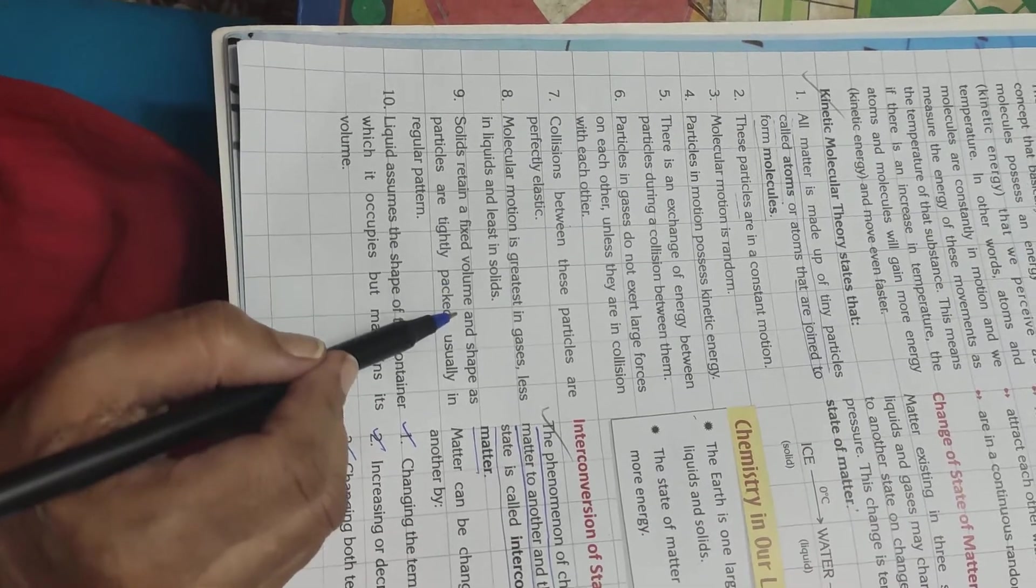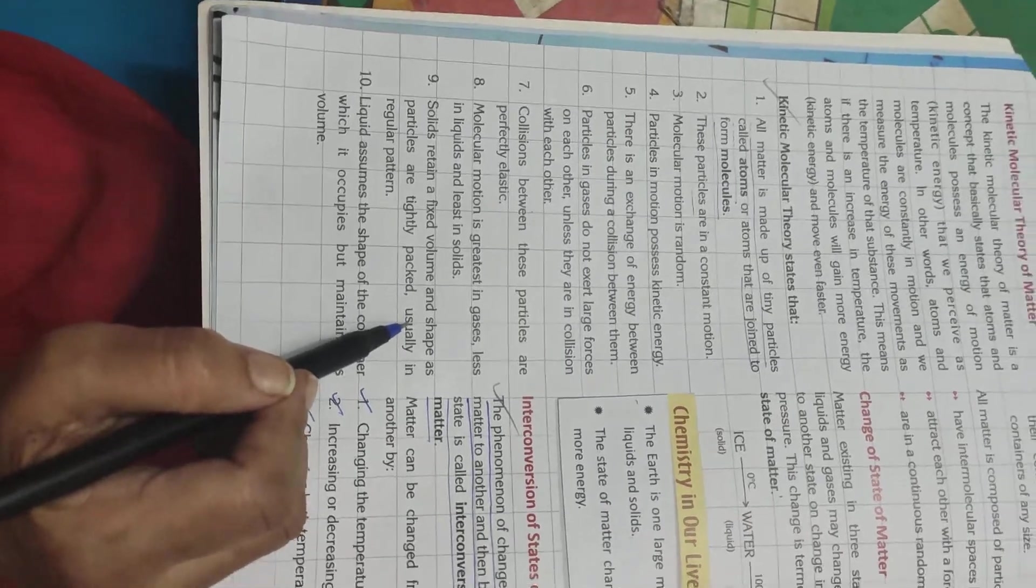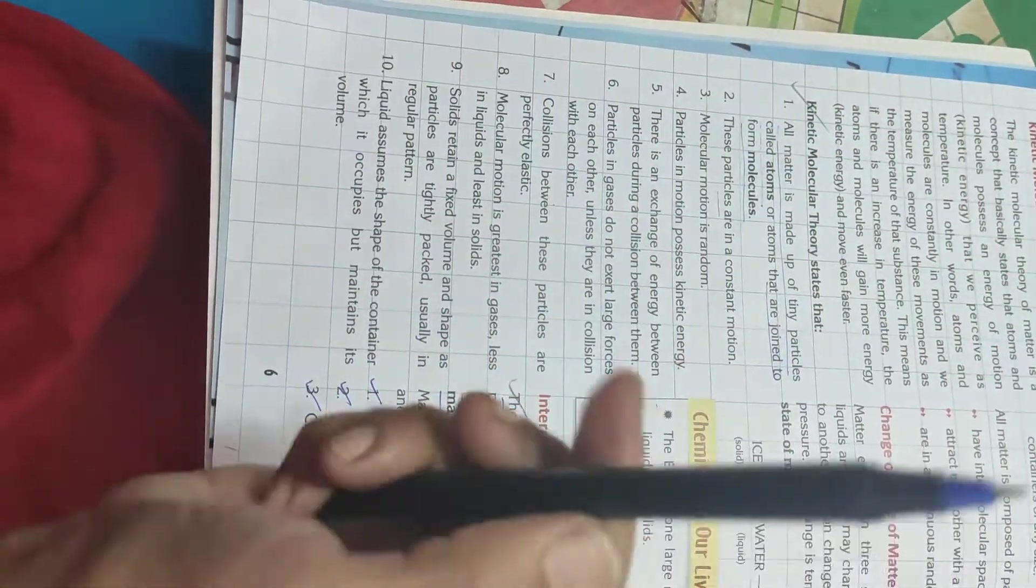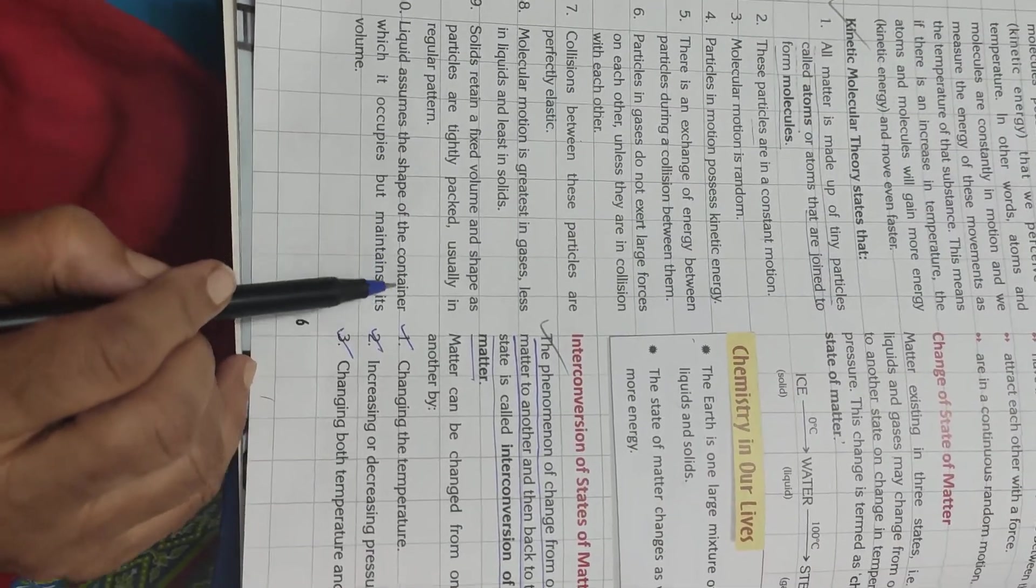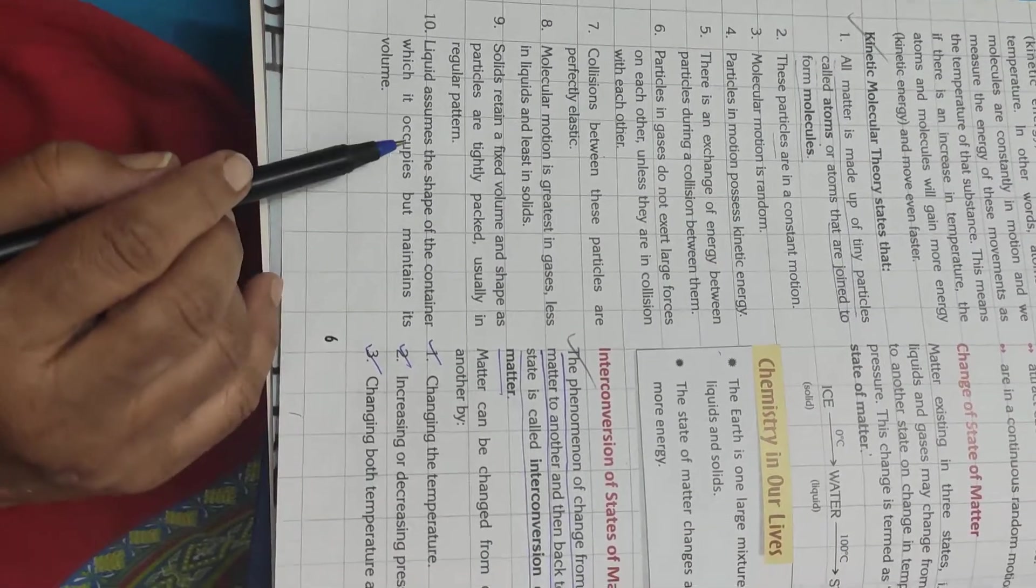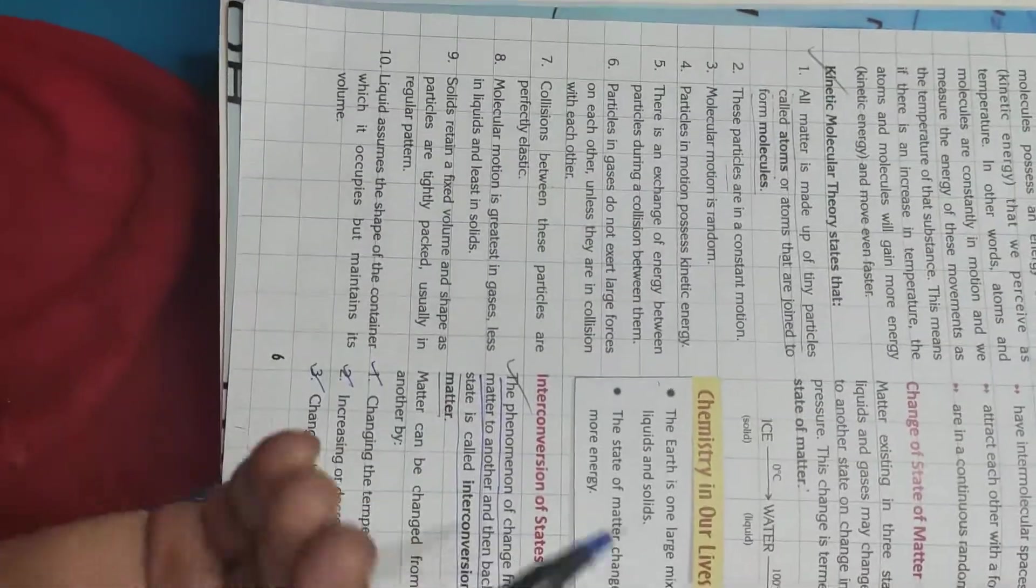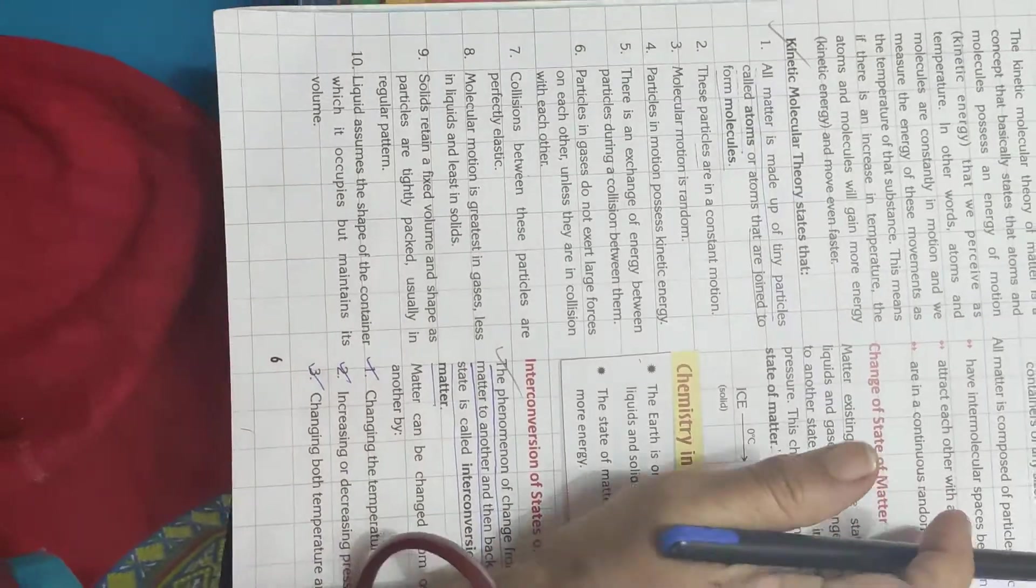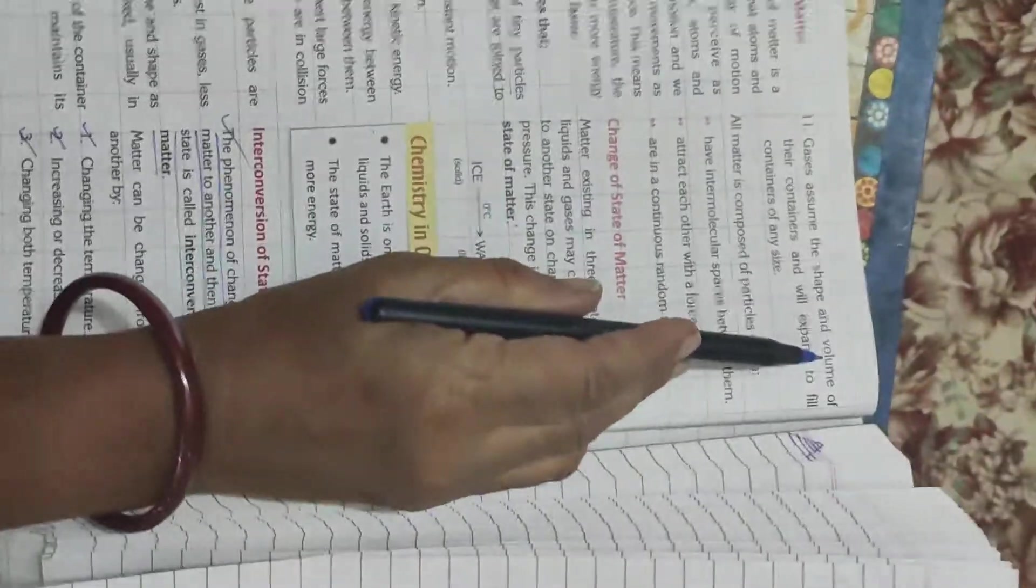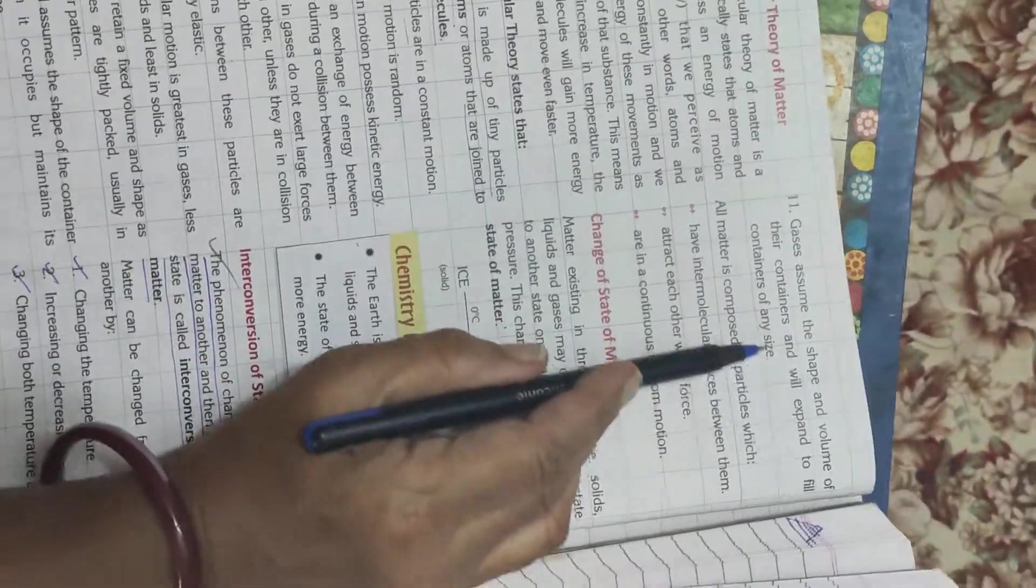Solids retain a fixed volume and shape. Why? Because the atoms are closely packed. So, we have a shape. Pen, we say, is this a cylindrical shape. Liquid assumes the shape of the container. What does it mean? That it takes the shape of the container. If you put water in a glass, it will take the shape of the glass. If you put water in a bowl, it will take the shape of the bowl. Gases assume the shape and volume of their containers and will expand to fill containers of any size.